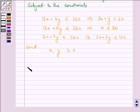So we have to take this inequality as 2X plus Y is equal to 60. For that, we have two points as (0,60) and (30,0).